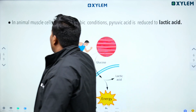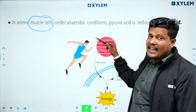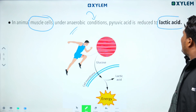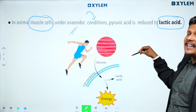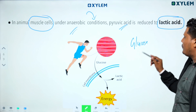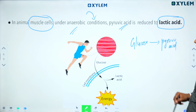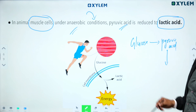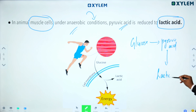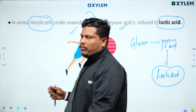In muscle cells under specific anaerobic conditions, glucose is first broken down to pyruvic acid. In anaerobic conditions, this pyruvic acid is then converted to lactic acid.